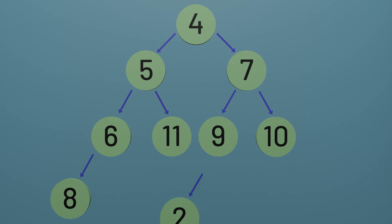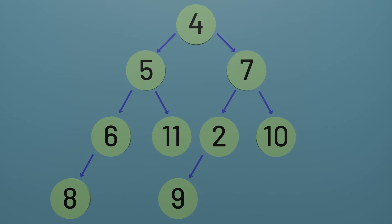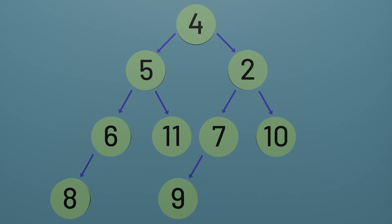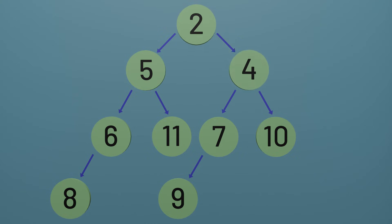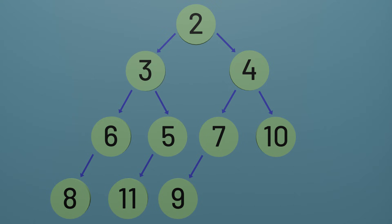In the worst case, we might add a node that's smaller than every other node in the heap, and in that case we would need to make swaps all the way to the top of the heap. But often that won't be necessary, and we'll just need to make a few swaps before the node ends up in the right place.